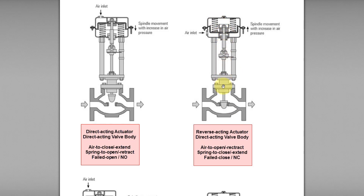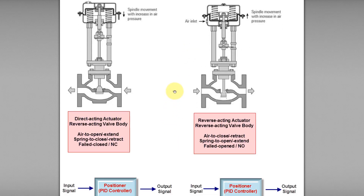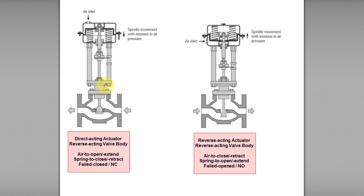The same explanation applies for these two control valves with reverse acting valve bodies. This one is called air-to-open or air-to-extend because when air is applied to the upper portion of the actuator, the diaphragm and spring compress downward, and the stem extends downward to open the valve body. This other one is called air-to-close or air-to-retract because when air is applied to the lower portion, the diaphragm and spring push upward, and the stem retracts outward to close the valve.